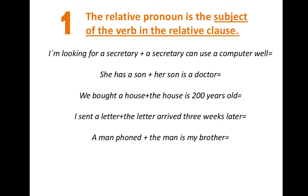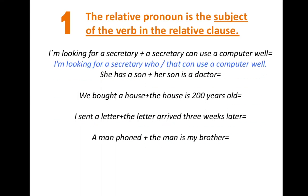Now let's see the examples. Each example has two clauses. First: 'I'm looking for a secretary' and 'A secretary can use a computer well.' The subject of the first clause is 'I,' the verb is 'am looking,' and the object is 'a secretary.' The subject of the second clause is 'a secretary.' What happens if we connect those two sentences? 'I'm looking for a secretary who — or that — can use a computer well.'